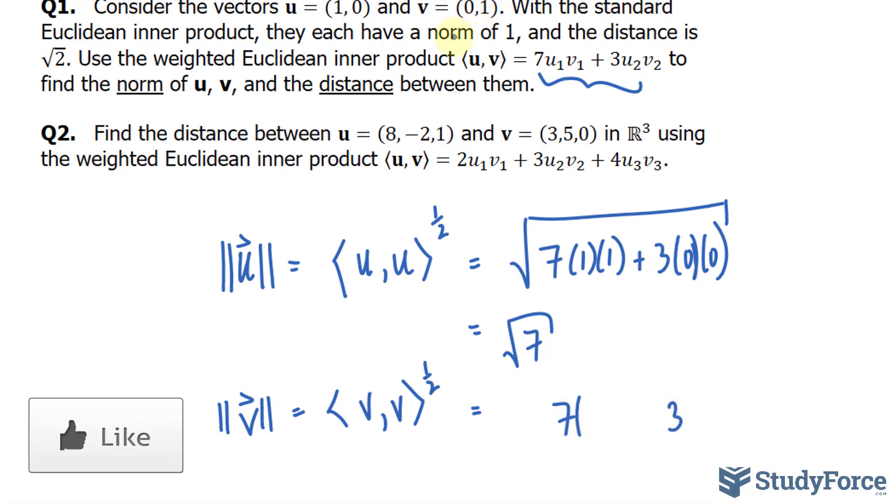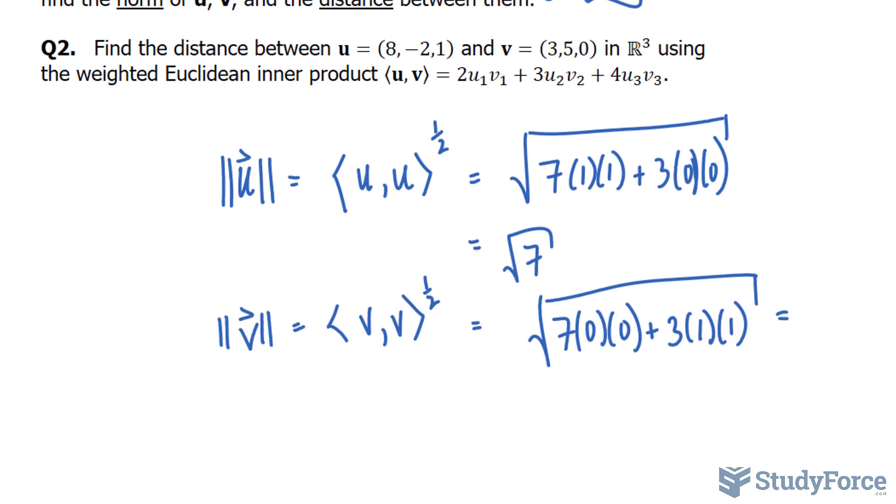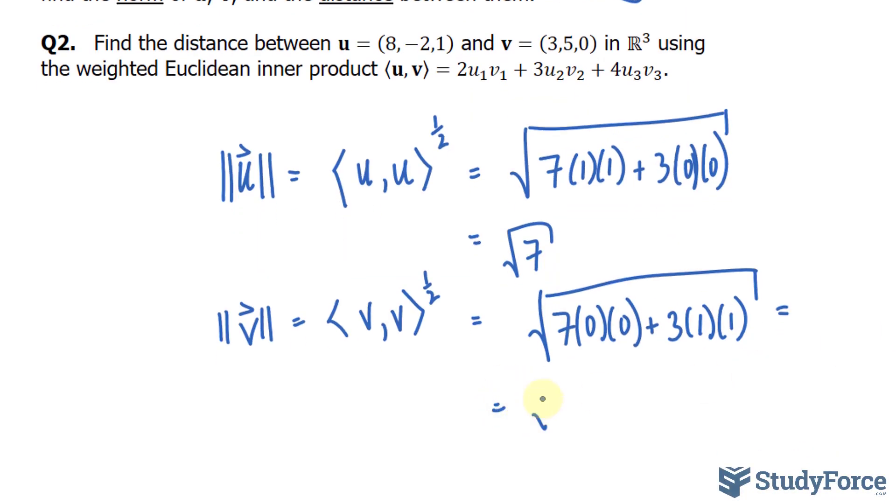For v, its components were 0 and 1. So, for the x components, we have 0 times 0, plus, and for the y components, they were 1. Don't forget the square root. We end up with the square root of 3.